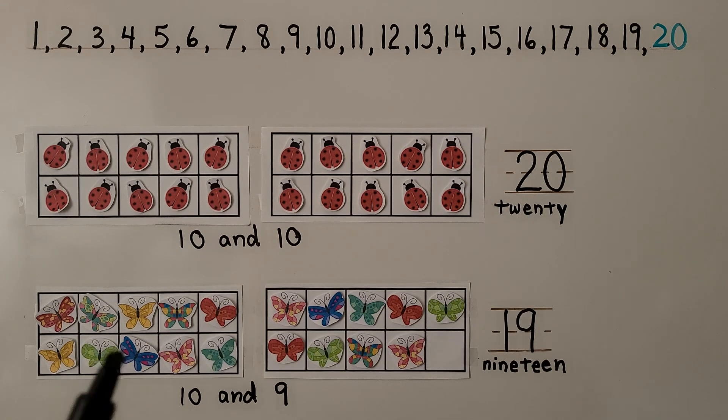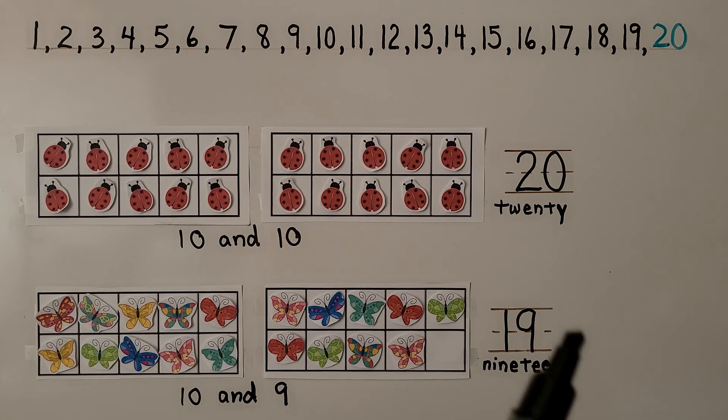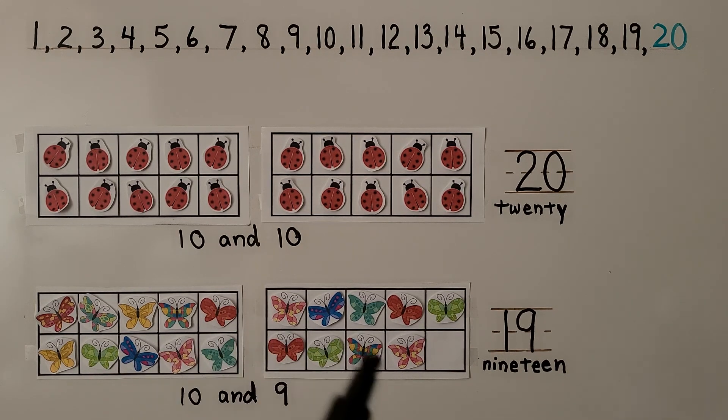Here we have some butterflies. The first 10 frame is full, and the second 10 frame is missing one. So there's nine. 10 and 9 is 19. Here we have the number 19 and the word nineteen. There are 19 butterflies. 19 is one less than 20.